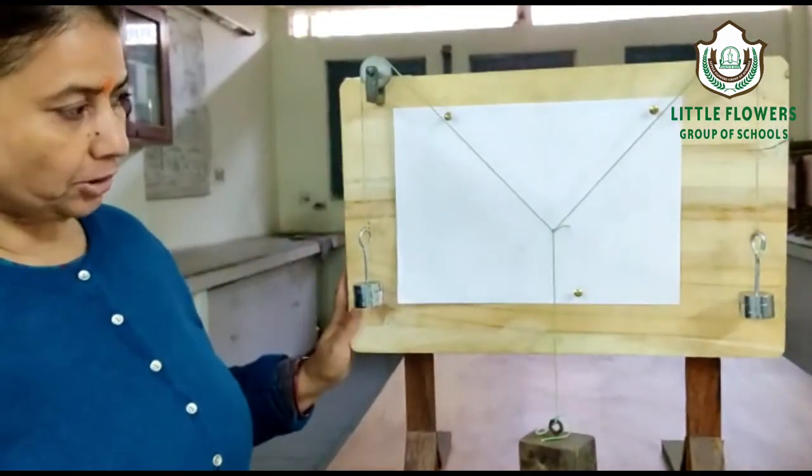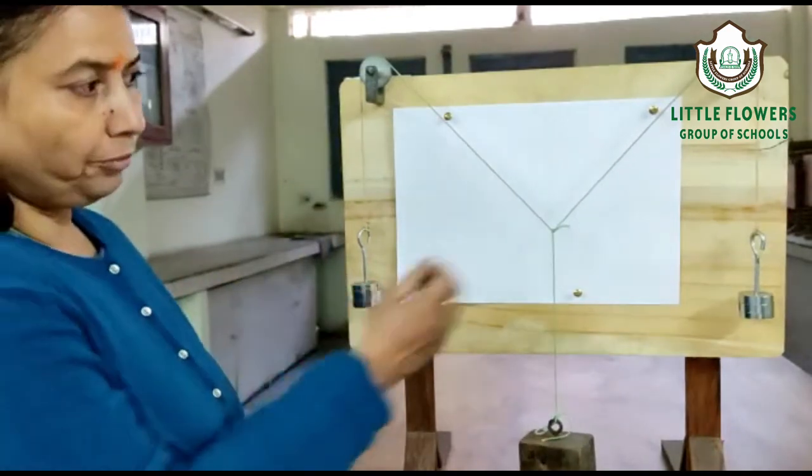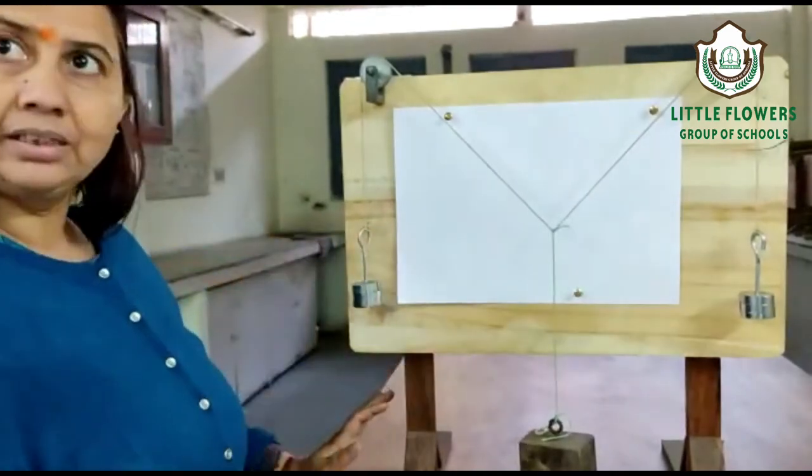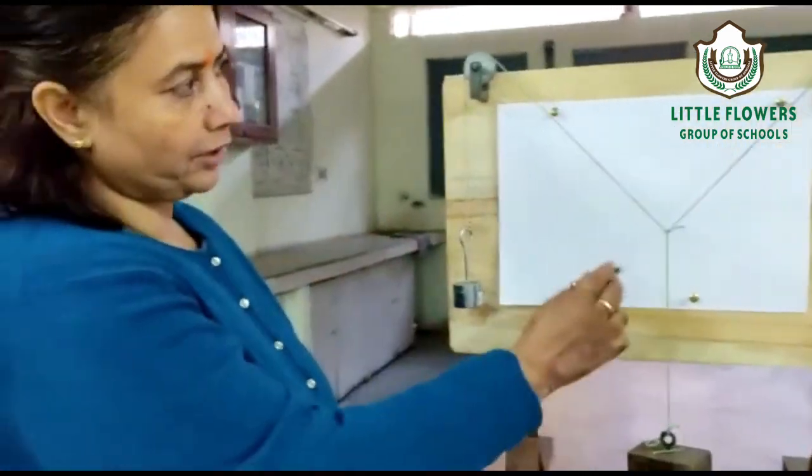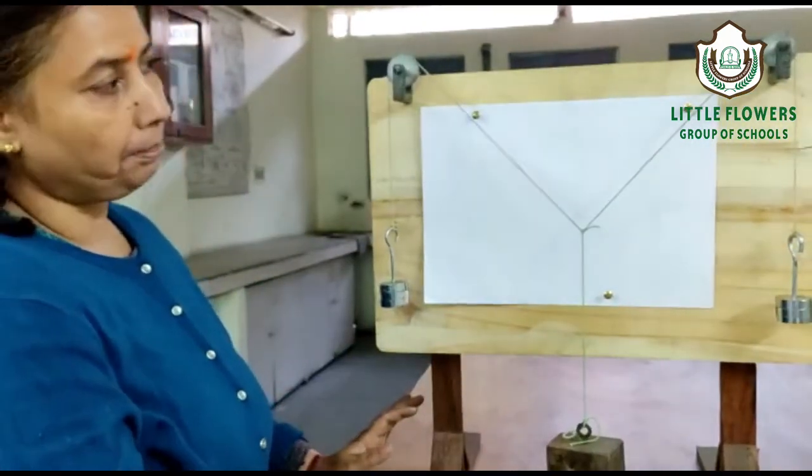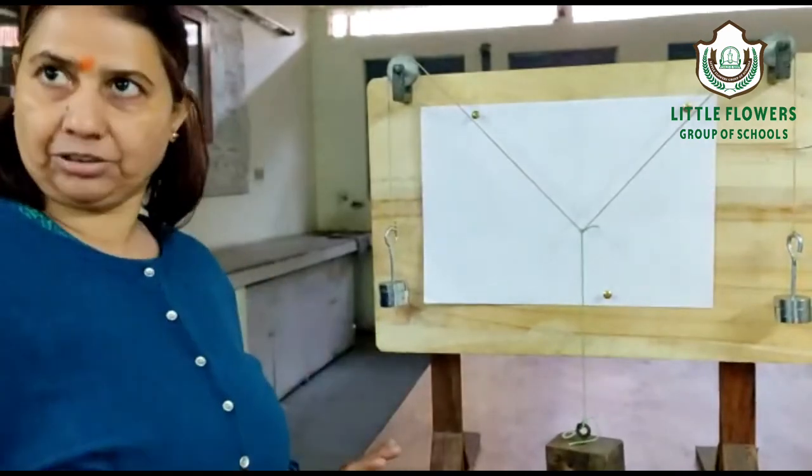Let's discuss the apparatus required. First, we'll need the gravesand apparatus, known weights and unknown weights which can be hung with the help of thread, an A4 sheet which is fixed with bone pins, a glass straight edge as well as compass, main scale or meter scale, pencil, eraser, sharpener, etc.